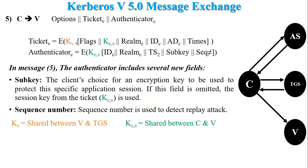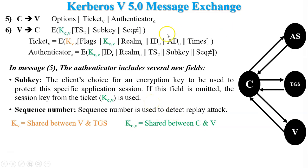In step six, the server sends a reply message to the client. The purpose of this message is to check the confidentiality of the message, because the message is encrypted using the session key KCV, which is shared between the client and server V. After step six, the client and server communicate with each other, and the server provides the requested services to the client.